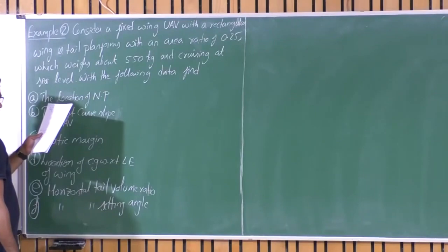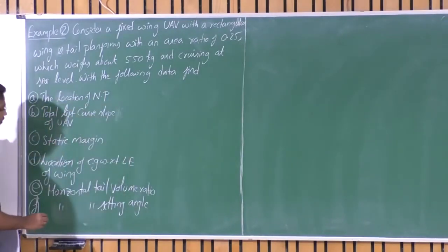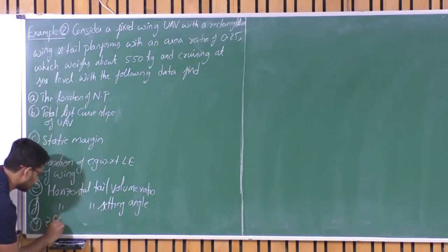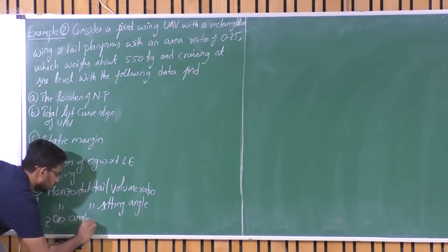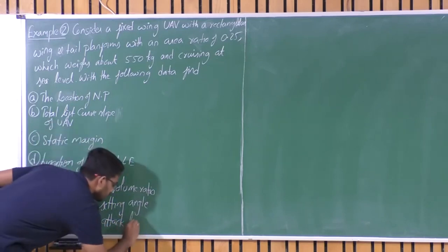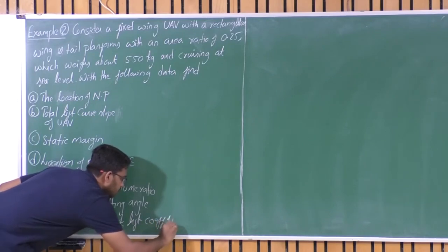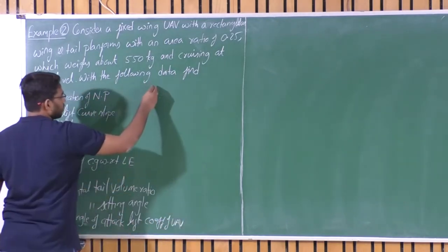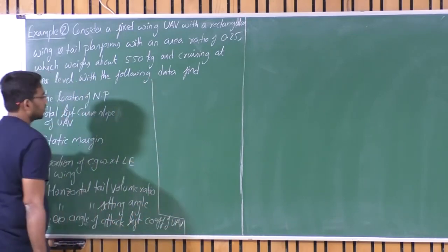Also find the zero-lift angle of attack and lift coefficient of the UAV. With stability analysis, we are trying to fix the geometric parameters — what should be the wing planform area, their location, the tail volume ratio, and the horizontal tail setting angle. Now let us look at the given data.